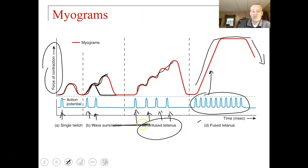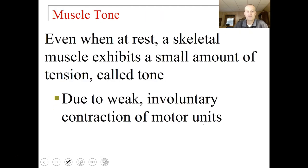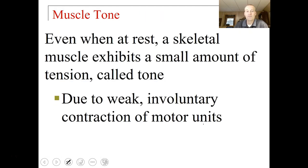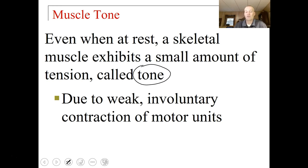We have different names for this: unfused tetanus and fused tetanus, depending on the frequency and timing of action potentials following the first. Even at rest, the muscle cell exhibits a small amount of tension called muscle tone, due to weak involuntary contractions of motor units. Our muscles are primed and toned all the time because of this weak involuntary signaling.